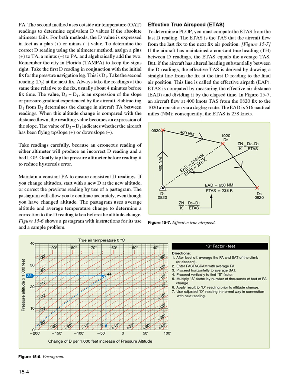Maintain a constant PA to ensure consistent D readings. If you change altitudes, start with a new D at the new altitude, or correct the previous reading by use of a postagram. The postagram will allow you to continue accurately even though you have changed altitude. The postagram uses average altitude and average temperature change to determine a correction to the D reading taken before the altitude change. Figure 15-6 shows a postagram with instructions for its use and a sample problem.